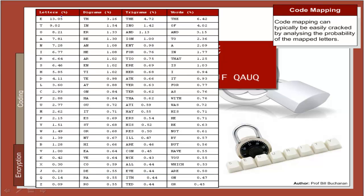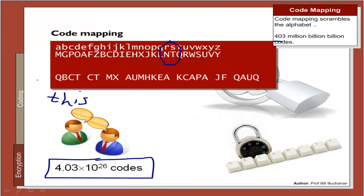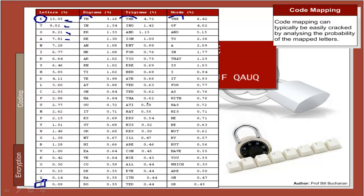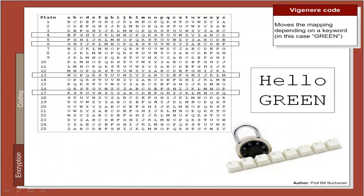Unfortunately, the English alphabet has a varying probability for each letter. For example, E is the most probable, and in UK English Z is the least probable. Along with this, there are two-letter and three-letter occurrences and words. So it is possible to look up the probabilities of each letter and match them with the cipher code. In this case, the letter E would be coded as A, so we could probably guess that. That method suffers greatly in that the probability is visible within the actual ciphertext.